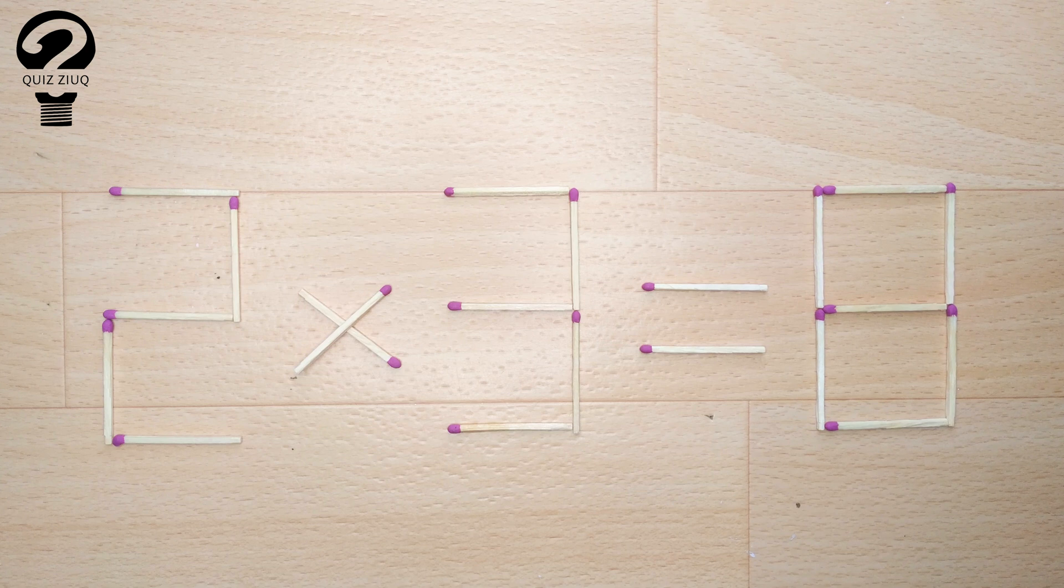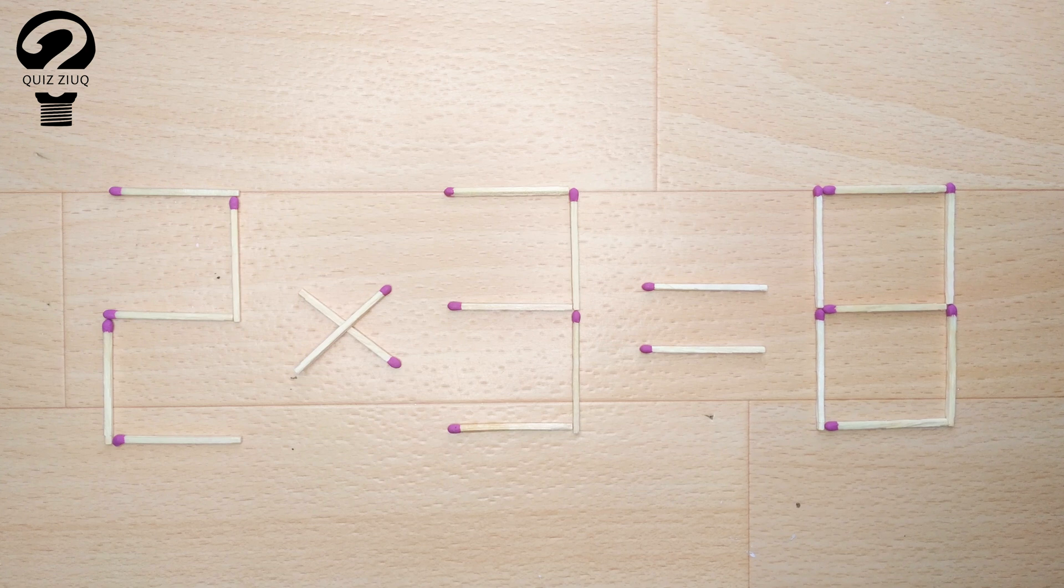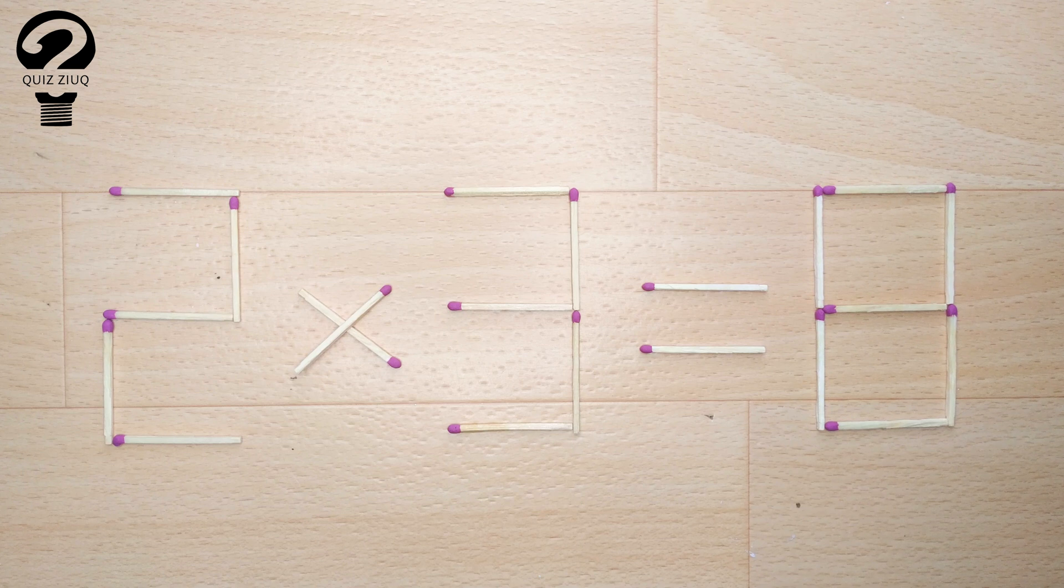We have this equation: 2 times 3 equals 8. Our equation is incorrect, and we need to move two matches to make our equation correct.